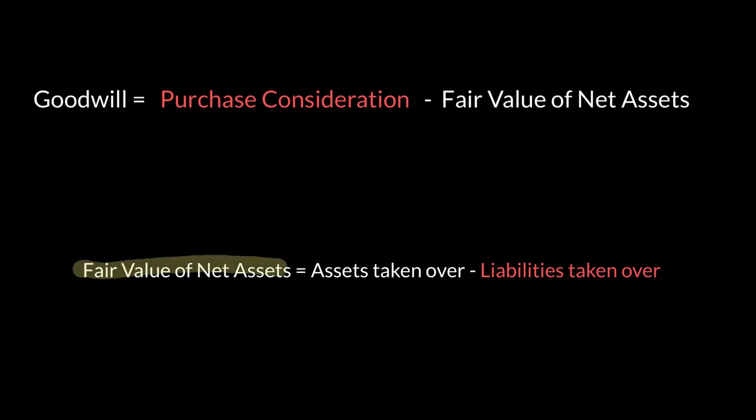The fair value is the value that the buyer will place on the assets and liabilities taken over — it has nothing to do with the seller. For example, the seller might say the building was bought for 80,000, but the buyer might say it's worth 60, or that it has increased and is now worth 100. Using the fair value we can find how much excess purchase consideration was paid for goodwill, and goodwill becomes an intangible non-current asset for the buyer because it will generate future economic benefit.